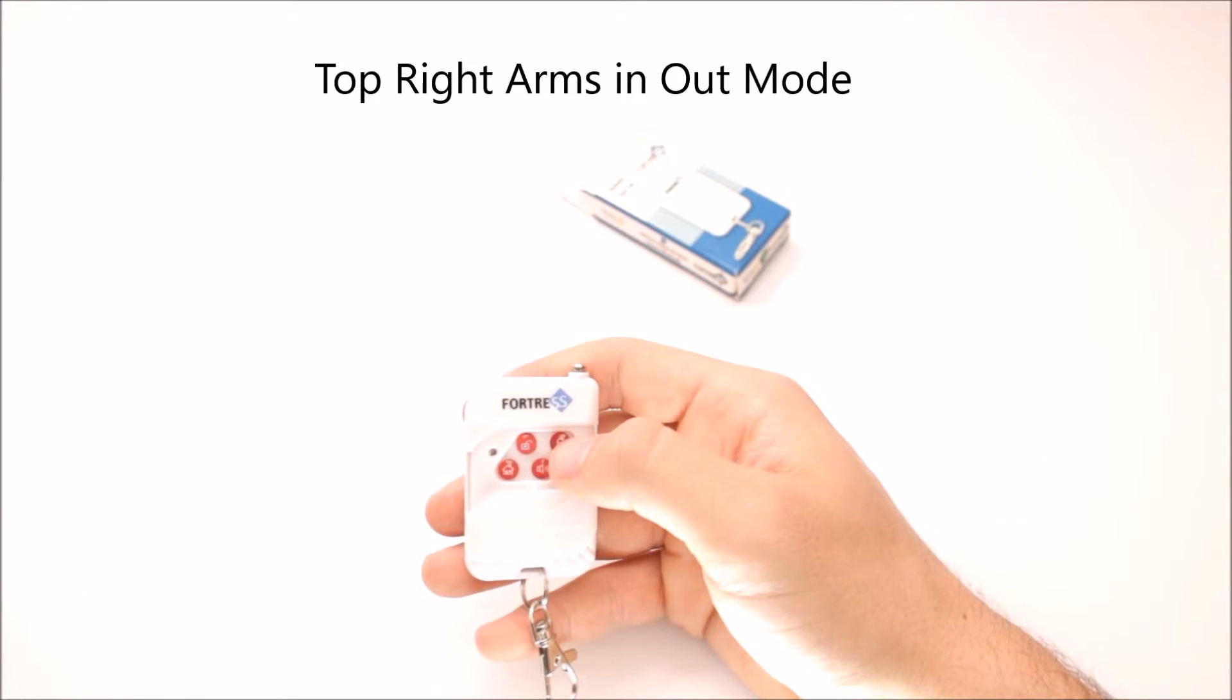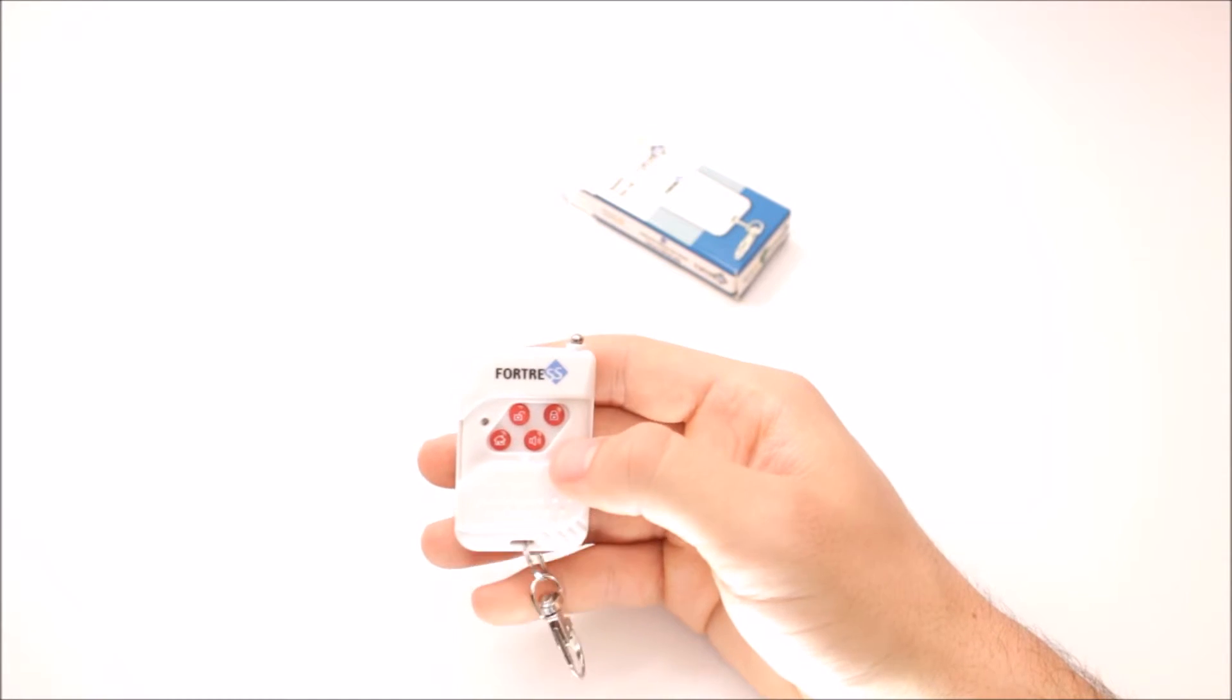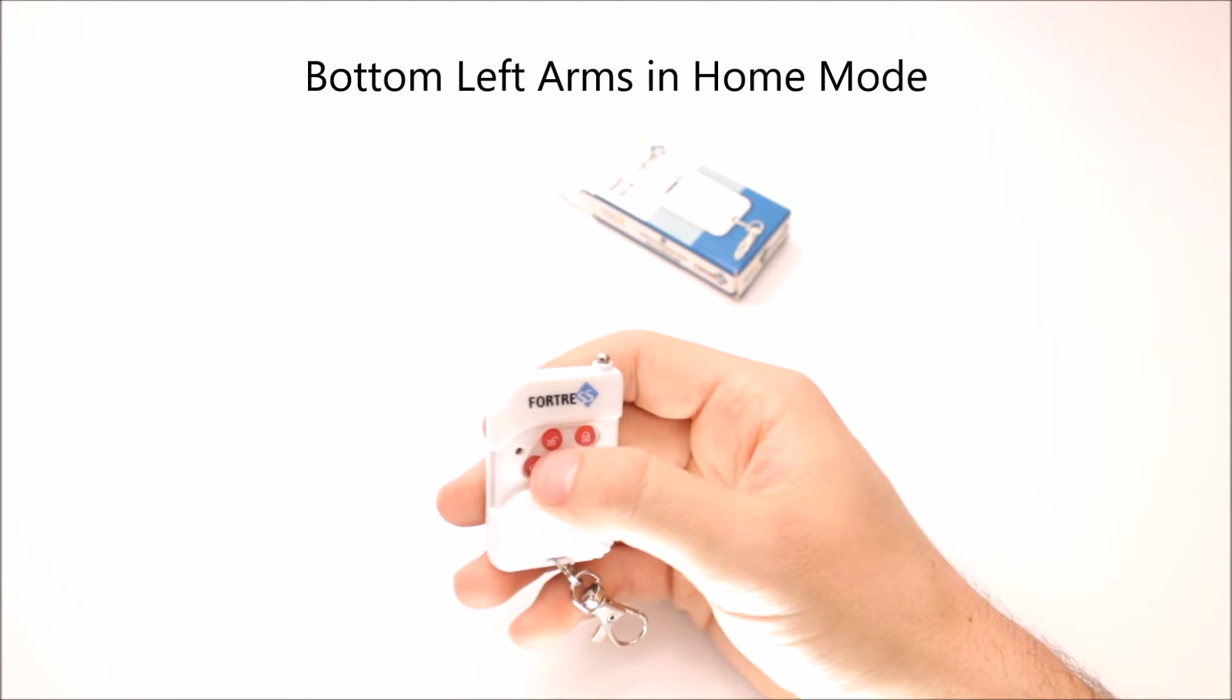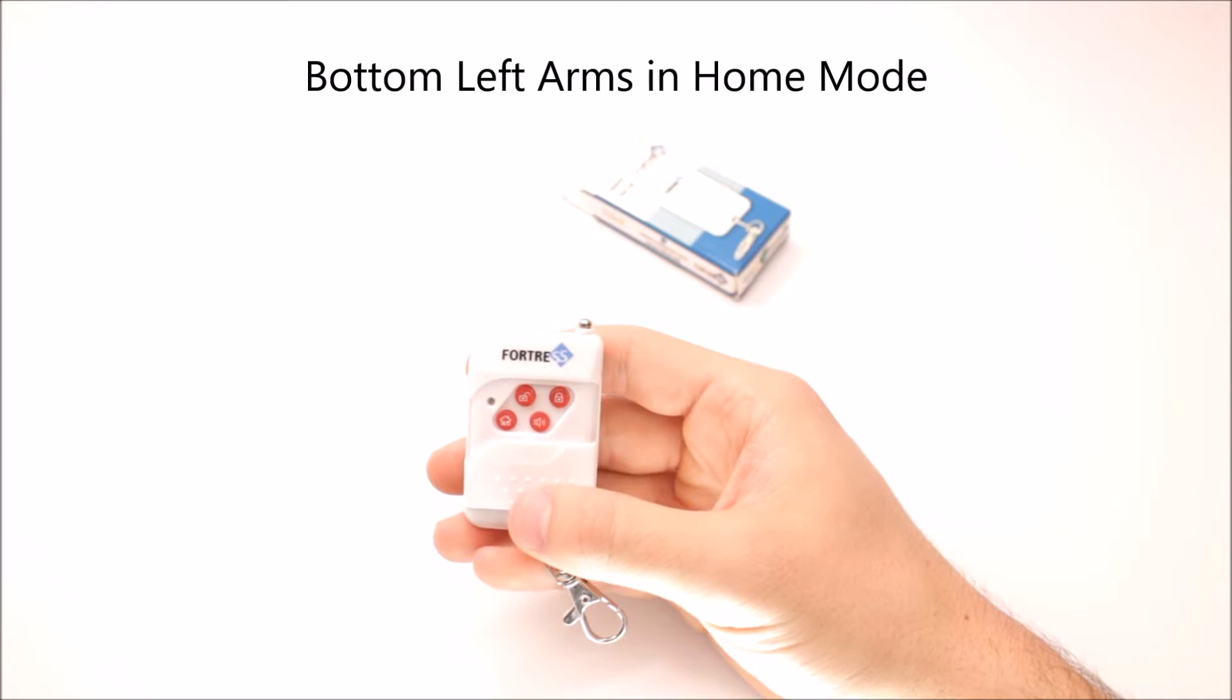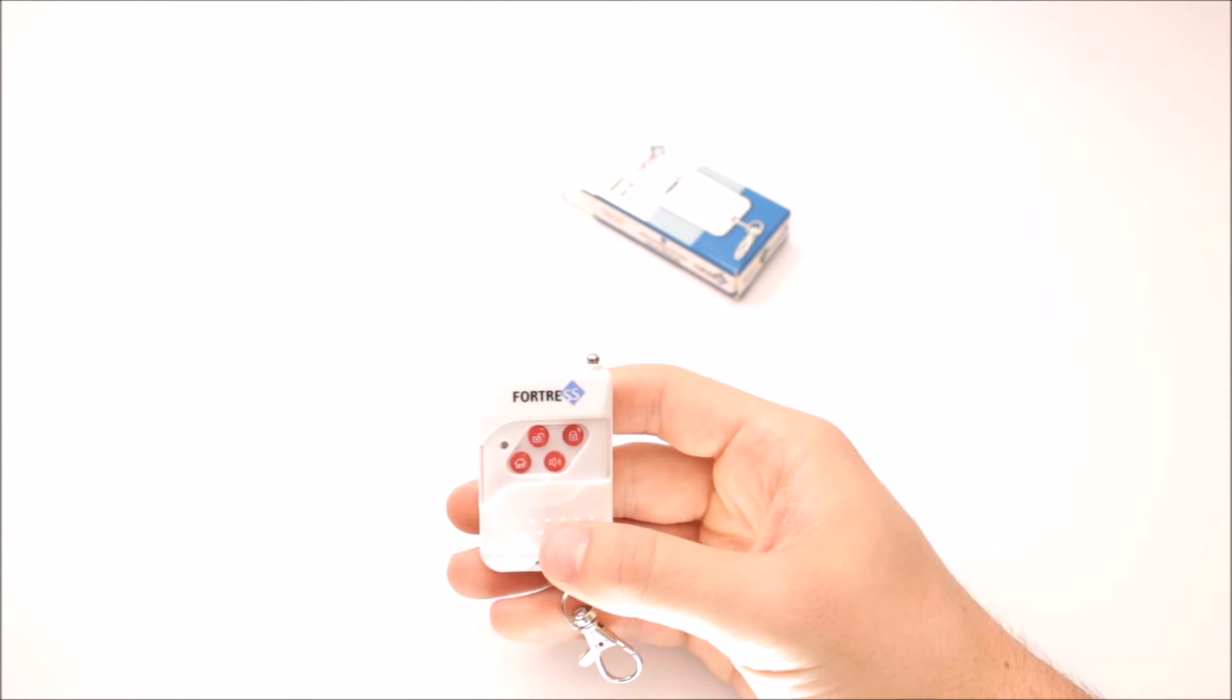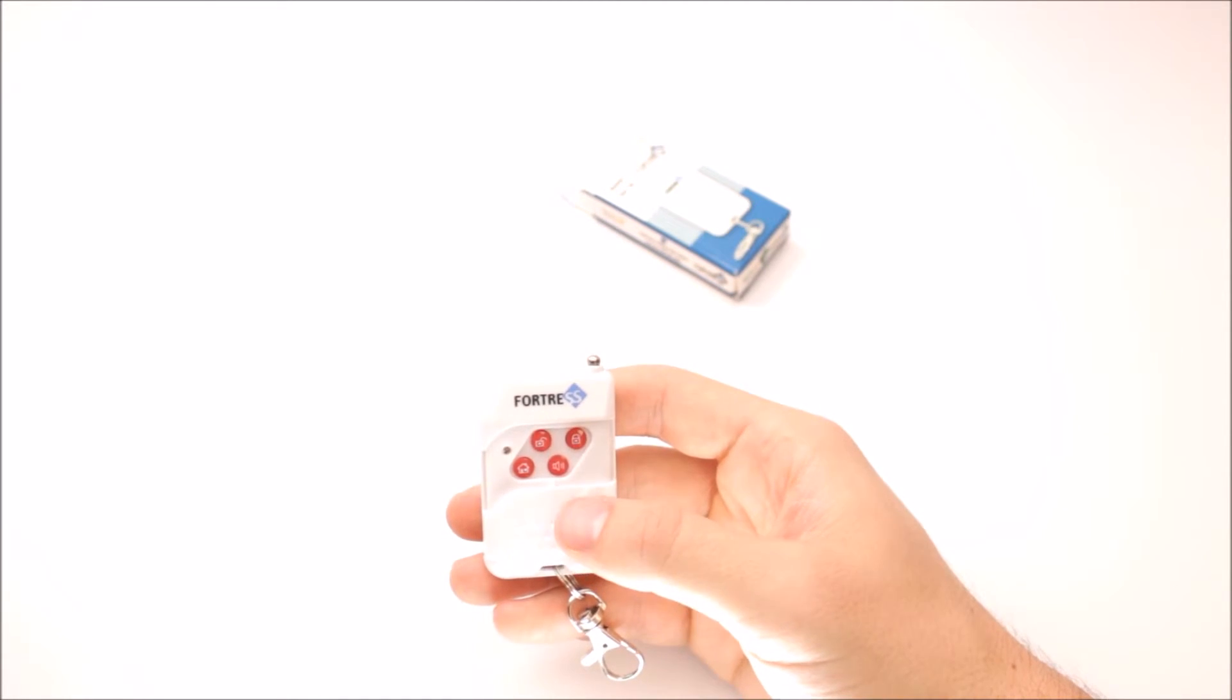Basically, the differences between the two arming modes is away, your motion detectors will be active. Arming in home mode, this bottom left hand button, that means that your motion detectors are set to be inactive. So that way you can walk around your house, you don't need to worry about your motion detectors catching you, and your perimeter will be secured still.